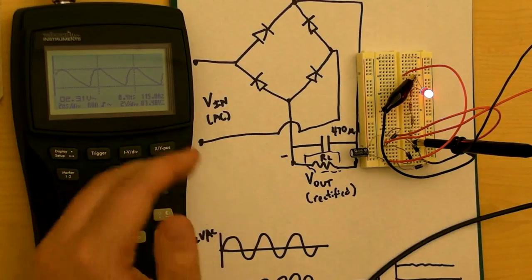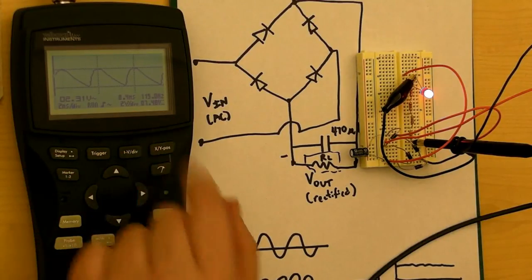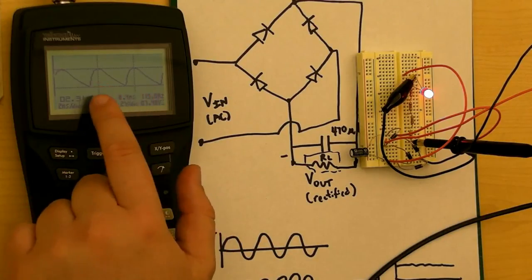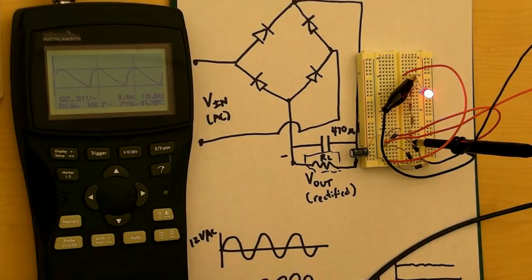It's 7.4 volts above ground. That's what's reporting there. And it's reporting that I'm getting a peak to peak, the signal is 120 hertz. Okay, that's pretty useful to know. Now, one thing I can do with this scope is I can change the volts per division and the time base.